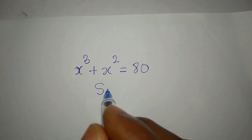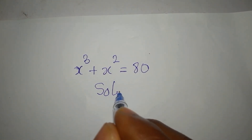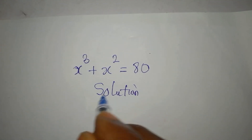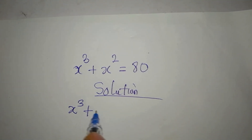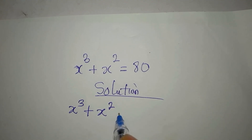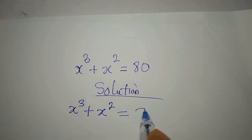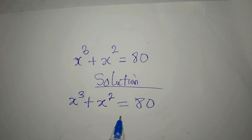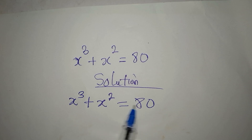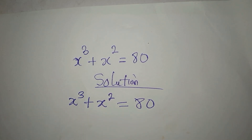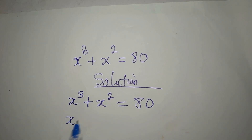Let's provide a solution very quickly: x to the power of 3 plus x squared equals 80. Every time you have this kind of problem, you look at what you have on the right, and if it's something you can express in a certain form, it's better to do it that way.